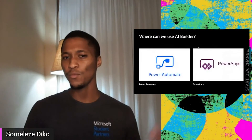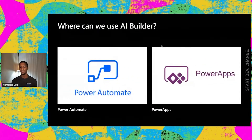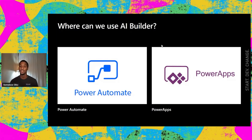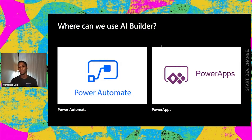So where can we use AI Builder? We can use AI Builder in Microsoft Power Apps, which is what we're focused on today. We can also use AI Builder in Microsoft Power Automate, where you want to leverage a component from AI Builder in your automation. It's really up to you, and this is what's exciting about the Microsoft Power Platform — it gives you options on where to use those components.